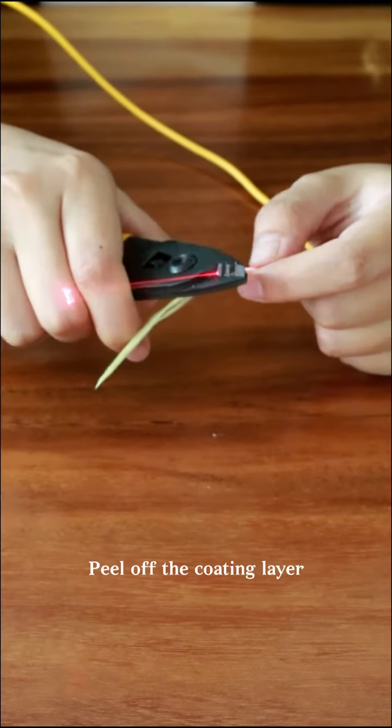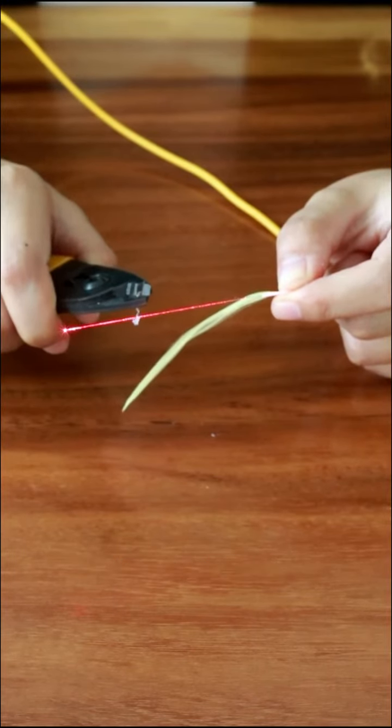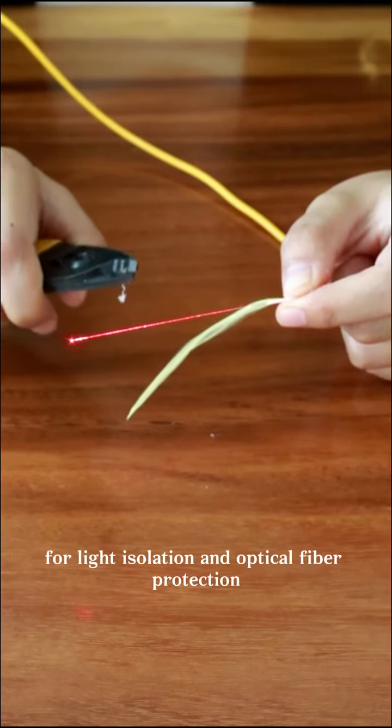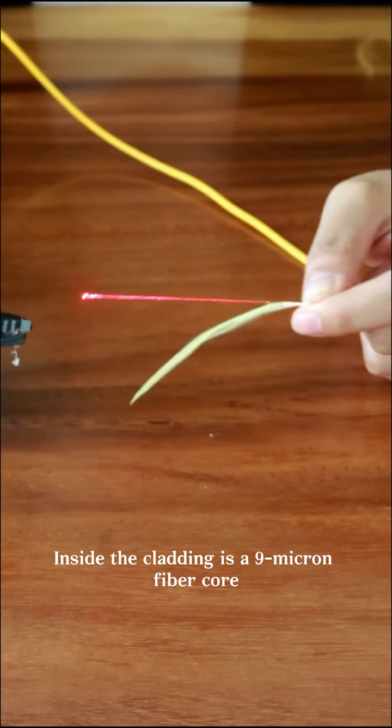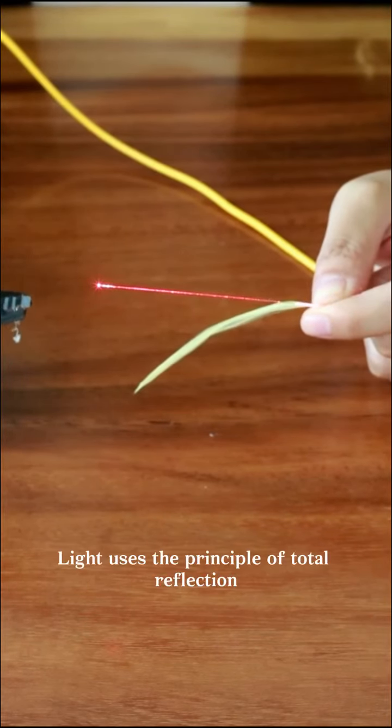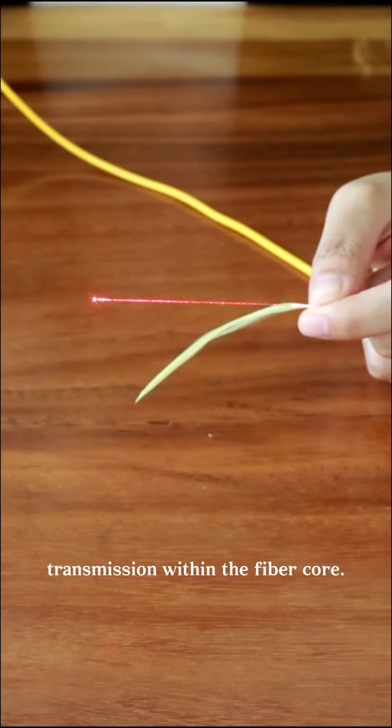Peel off the coating layer. This is a 125 micron cladding for light isolation and optical fiber protection. Inside the cladding is a 9 micron fiber core. Light uses the principle of total reflection for transmission within the fiber core.